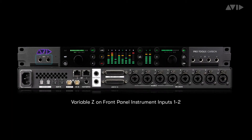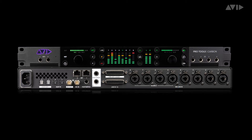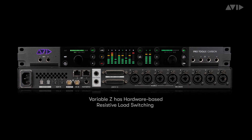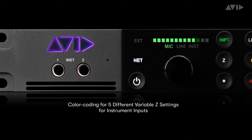Variable Z lets you change the impedance of the instrument inputs on the front panel or mic inputs 5 to 8 on the rear panel, depending on what your input or processing needs are. This is achieved with switchable resistive loads on these physical inputs. The front panel instrument inputs have 5 different colour-coded settings.